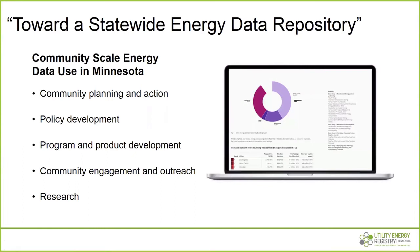Number three: program and product development — utilities that offer programs like Xcel Energy does could provide a way to track the success of those programs over time. Number four: community engagement and outreach — an example is energy competitions, like the City of Duluth, which was recently selected as one of 50 communities to compete nationally for the Georgetown Energy Prize, which tracks monthly data for each community through an online dashboard. Number five: research — research efforts provide the foundation for the ongoing evolution of policies, programs, products, and processes aimed at advancing clean energy.